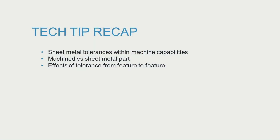So to recap, when designing a sheet metal part, sheet metal tolerances should be considered in the design intent of the part and its functionality to be successful. Following these tolerance guidelines keeps a part within the process capabilities of the fabrication equipment, allows for lower costs and shorter lead times for a project.